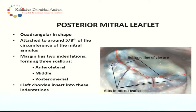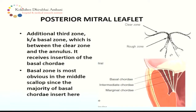The posterior mitral leaflet is quadrangular in shape. It is attached to the remaining five-eighths of the circumference of the mitral annulus. It has two indentations forming three scallops: anterolateral, middle, and posteromedial. The cleft chordae insert into these indentations. When you see the posterior leaflet more closely, it has three zones, unlike the anterior leaflet which has two zones (rough and smooth). The third zone is the basal zone, found especially in the middle scallop, and this is where the basal chordae are attached.